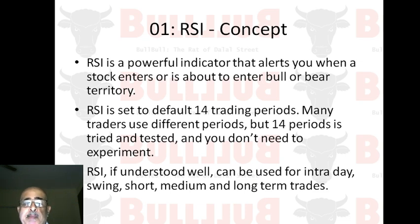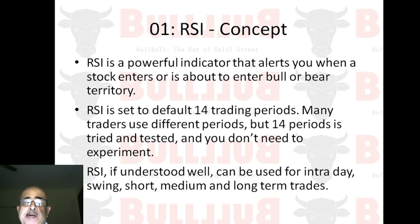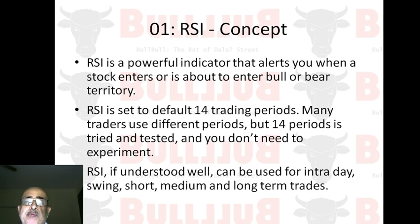By default, RSI is set to 14 trading periods. A trading period corresponds to one candle on a chart. If you set your chart to a five-minute candle, then one candle is equal to five minutes — that's a five-minute trading period. If you set your chart to one day, each candle will represent one day's activity.